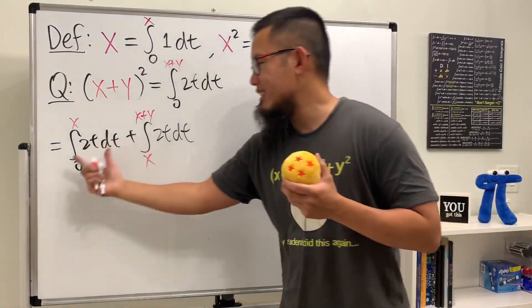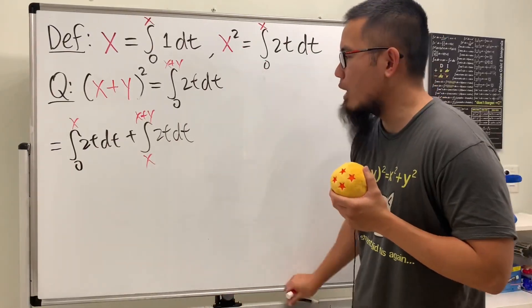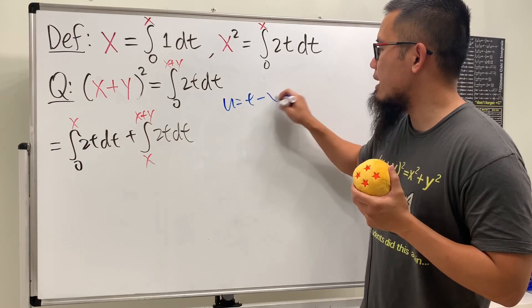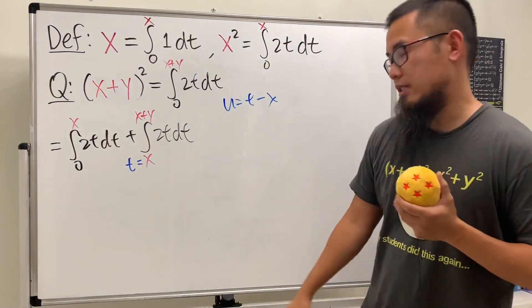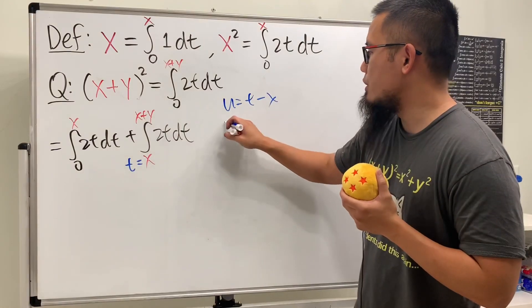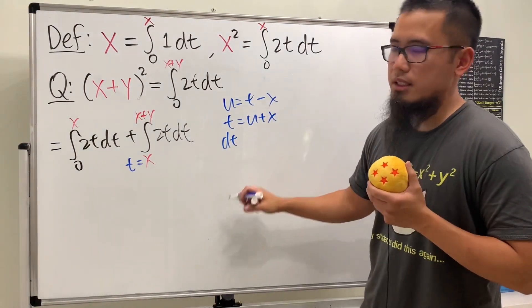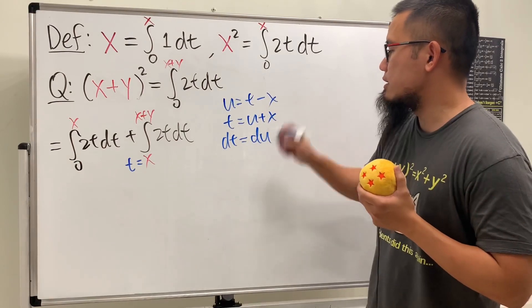And this is so nice because this is going to give us x squared, but for the second one, we will actually have to do a u sub. Let u equal to t minus x, because you see that when t is equal to x, you will begin at 0, which is very nice. And move things around, we know t is equal to u plus x. Differentiating both sides, we know dt is equal to du, and keep in mind x is just a constant.